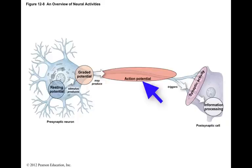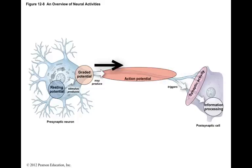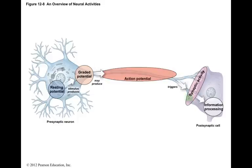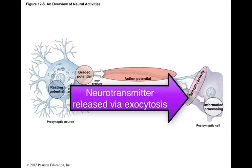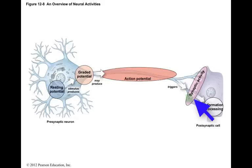An action potential is a change in the resting potential that is large enough to propagate or spread along the surface of the axon, and it does not diminish as it moves away from the stimulus. The action potential travels down the length of the axon of the presynaptic cell to the synaptic terminal, or synapse, where a neurotransmitter will be released via exocytosis into the synaptic cleft. These neurotransmitters will bind to receptors on the postsynaptic cell membrane, changing its permeability to sodium. This mechanism is very similar to the events at the neuromuscular junction.